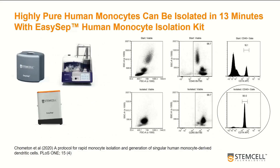First, we need to isolate monocytes from peripheral blood mononuclear cells. Our EasySep human monocyte isolation kit can easily and quickly isolate monocytes in 13 minutes, resulting in label-free cells with high monocyte purity. The kit is available for small to large-scale PBMC volumes and can also be automated with a RoboSep instrument. The flow panel shown represents PBMCs before monocyte enrichment, with purity indicated by staining for CD14. After isolation, we see very high purity of CD14-positive cells suitable for downstream applications.